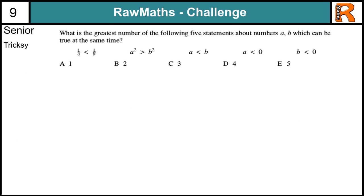Senior Trixie from Raw Math Challenge number eight. If you haven't had a go at this question yet, pause the video and give it a try now. So, we have to try to see how many of these statements would be true at any one time. Let's just see if we can make all five statements true. So, A is going to be less than B. A is less than zero. B is less than zero. So, we'll just try some negative numbers where A is less than B. So, minus two, minus one.